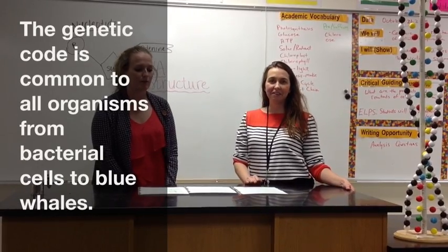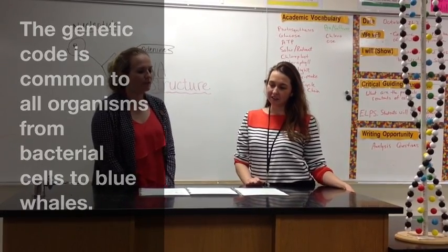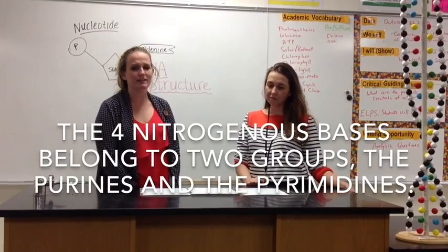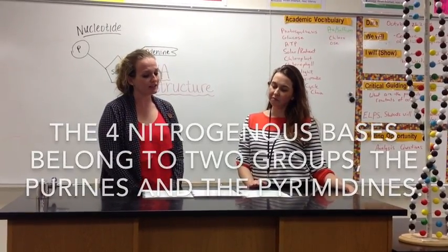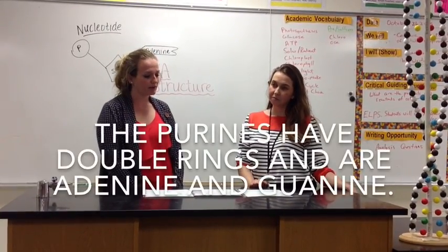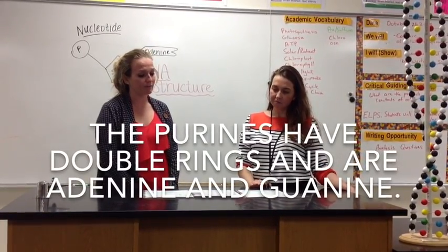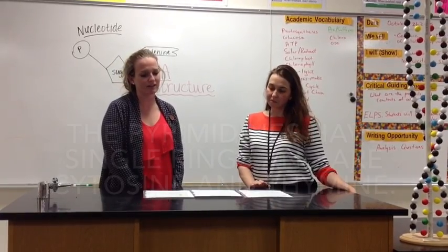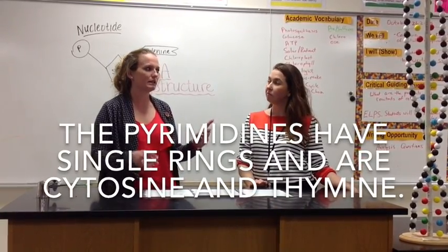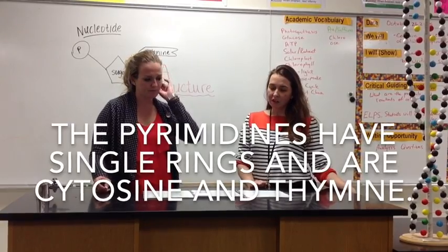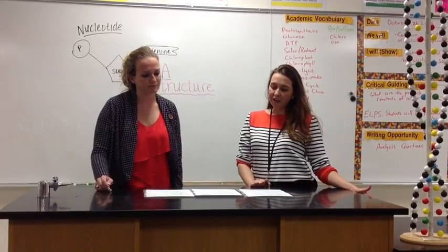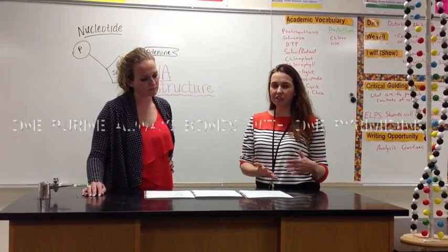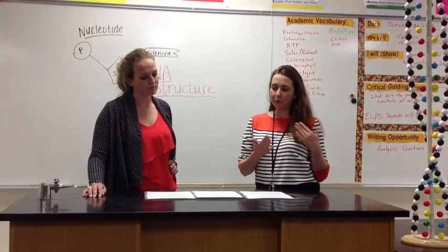The four bases belong to two groups: the purines and the pyrimidines. Purines have double rings and are adenine and guanine, while pyrimidines have single rings and are cytosine and thymine. One purine always bonds with a pyrimidine.